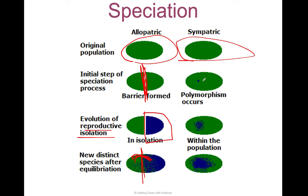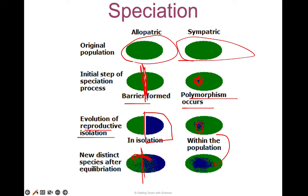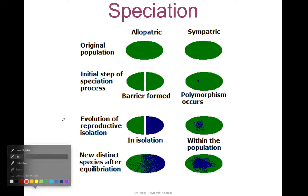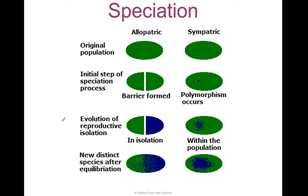Sympatric is essentially the same thing, but instead of a barrier forming, there's a mutation that occurs that allows a small population to start filling in the new niche. They mate with each other, the population becomes bigger, and you can see that the new species — distinct from the old — is still within the total population.